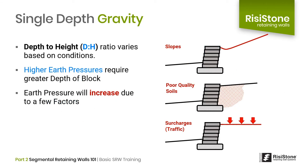This ratio will vary based on a few factors. As earth pressures increase, the depth of the wall must also increase. These factors include slopes above the wall — the steeper the slope, the more pressure is exerted. Also the quality of soil being retained: a high-quality gravel will exert less force than a clay. And the presence of surcharges, such as a traffic load or a footing for a house.